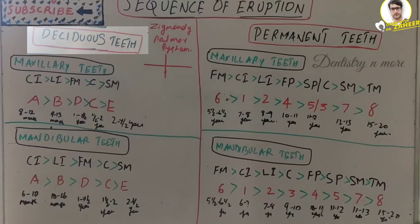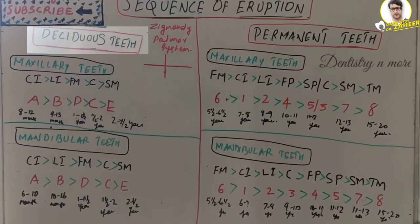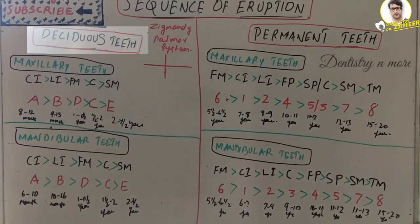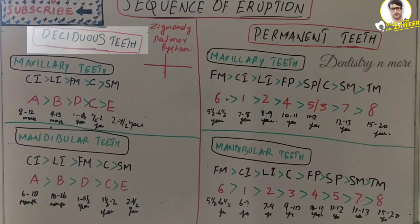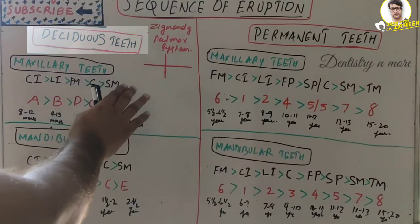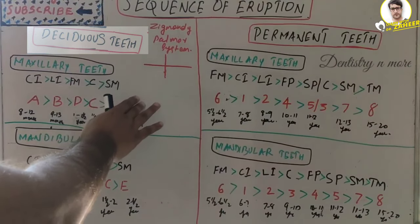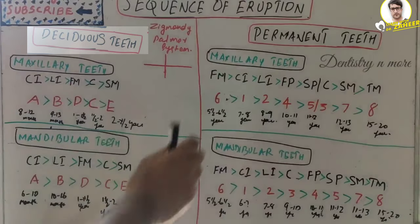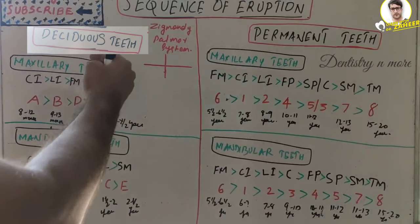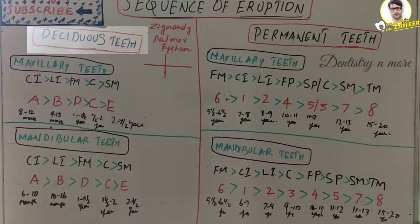Hello everyone, welcome back to another session in dentistry and more. Today we have a small topic from dental anatomy — the sequence of eruption. We have the sequence of eruption of deciduous teeth and permanent teeth with respect to the maxillary and mandibular arch.